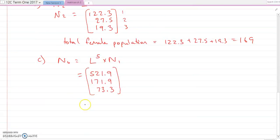This is the answer I get. So the females, we just add those all up: 521.9 plus 171.9 plus 73.3, and you get 767.1.